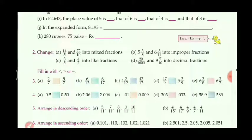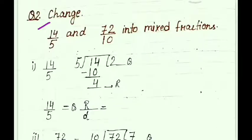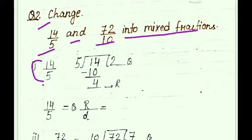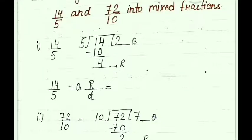Let's see the solution of this question. See carefully — question number 2: change 14 upon 5 and 72 upon 10 into mixed fraction. So here we write 14 upon 5 simply. We will divide denominator by numerator: 5 into 14 — how many times divisible? 5 twos are 10, so 10 is coming.